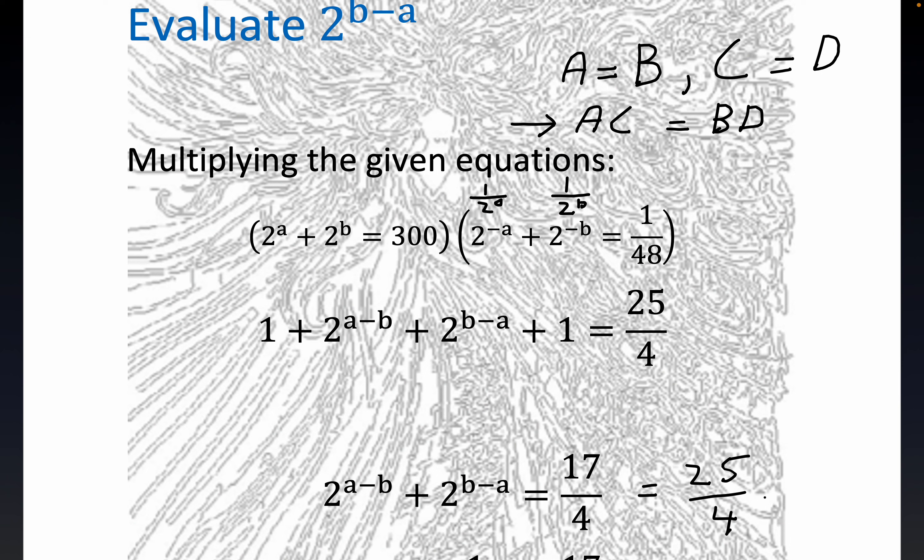And so this 17 over 4 you see is just 25 over 4 minus 2. But do note that 2 is the same as 8 over 4, right? 2 is the same thing as 8 over 4. And so 25 minus 8 is 17, so that's where we get this.